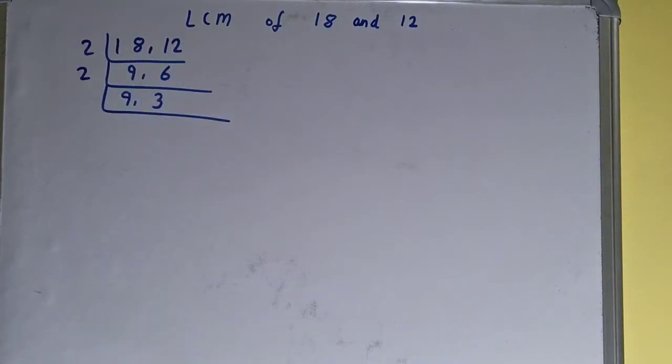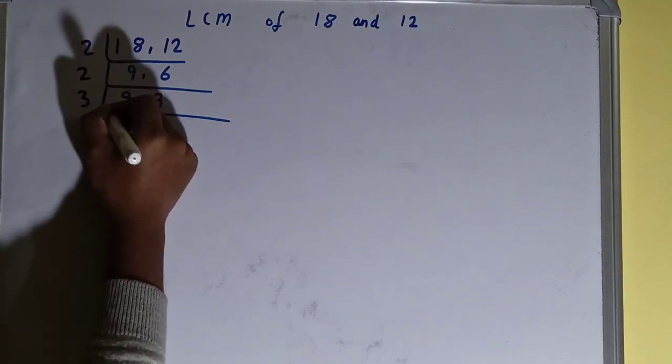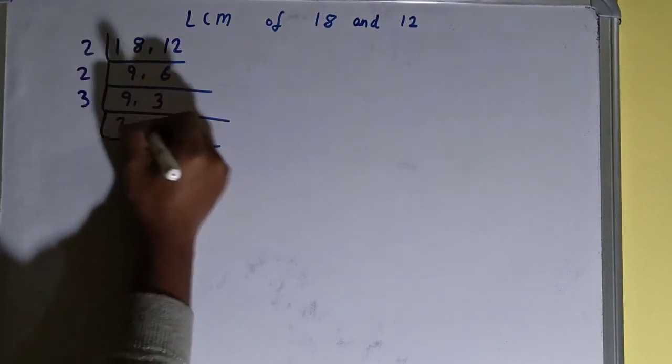Now if we check, then none of the numbers is divisible by 2, so we'll go to the next prime number, that is 3. And with 3, both the numbers are divisible, so we'll divide and we'll be having 3 comma 1.